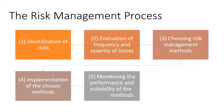The risk management process in any organization comprises five steps: first, to identify the risk; then to evaluate the frequency and severity of losses; then to choose the best risk management methods; then implementing the chosen method; and lastly, to monitor the performance and suitability of the selected methods.